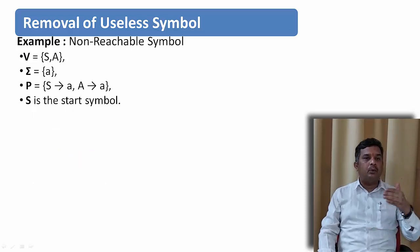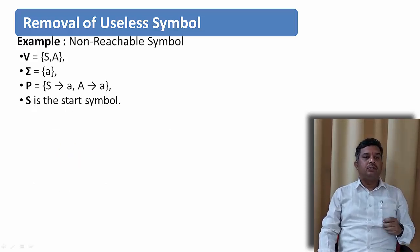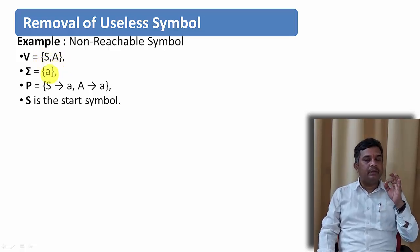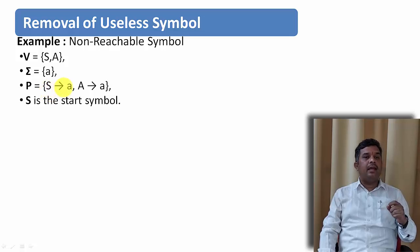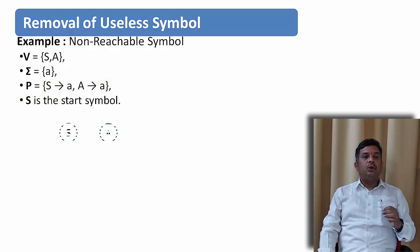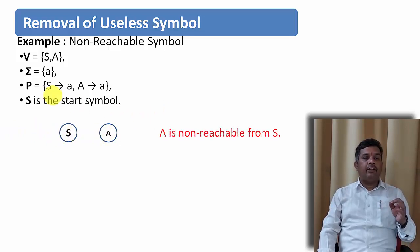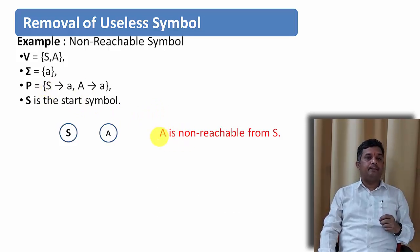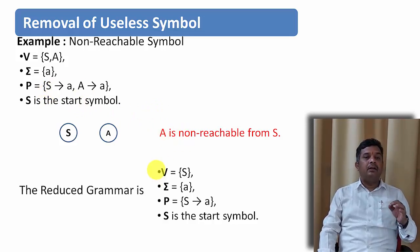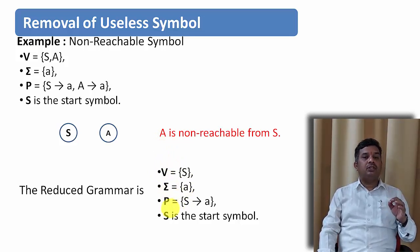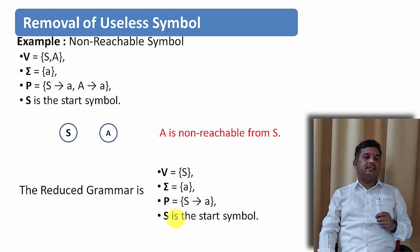Let us take an example of a non-reachable symbol. The variables are S and A, the terminal symbol is 'a', and the productions are S derives 'a' and A derives 'a', with S as the starting symbol. There is no connectivity between S and A, so A is not reachable from S. The reduced grammar has variable S, terminal 'a', and production S derives 'a', with S as the starting symbol.